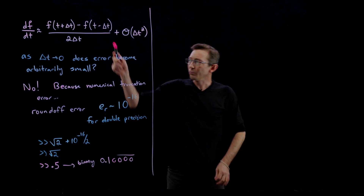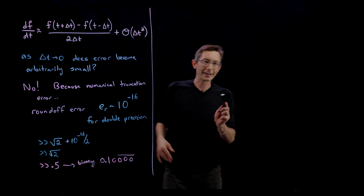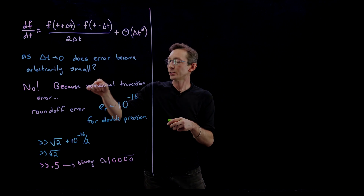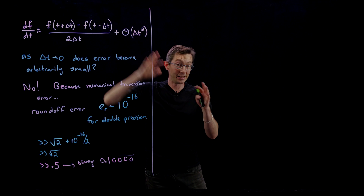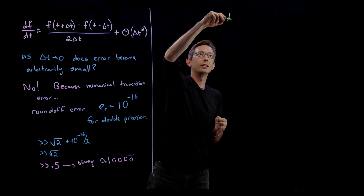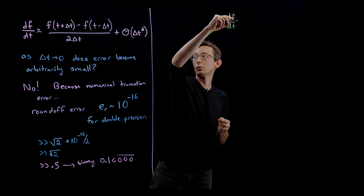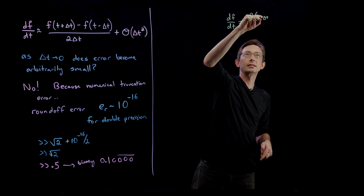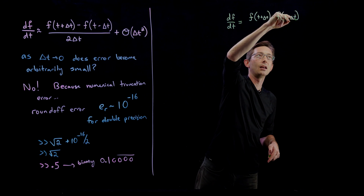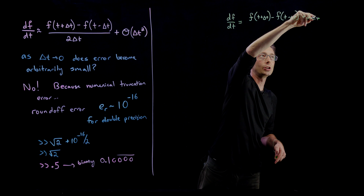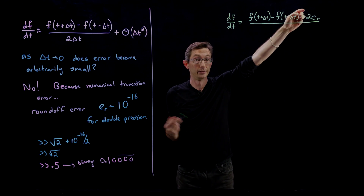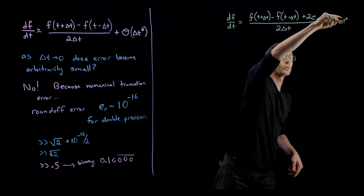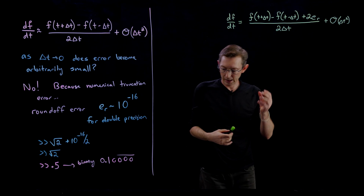Now we're going to take this expression for df/dt and recognize that each of these numbers probably has a little machine precision roundoff error. So we can add E_r to each of these numbers in the computer since they're probably not going to be represented perfectly. In the computer, df/dt equals f(t + Δt) minus f(t − Δt) plus two machine errors — and these errors accumulate additively — divided by 2Δt, plus order Δt squared.